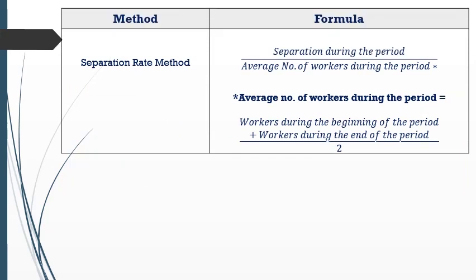The formula for the separation method is: number of separations during the period divided by the average number of workers during that period, multiplied by 100. The average number of workers is calculated as the number of workers at the beginning of the period plus the number at the end of the period, divided by 2.